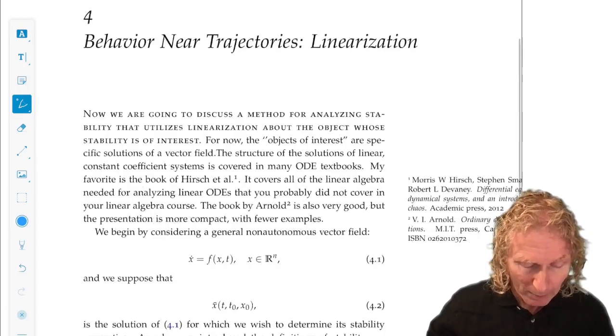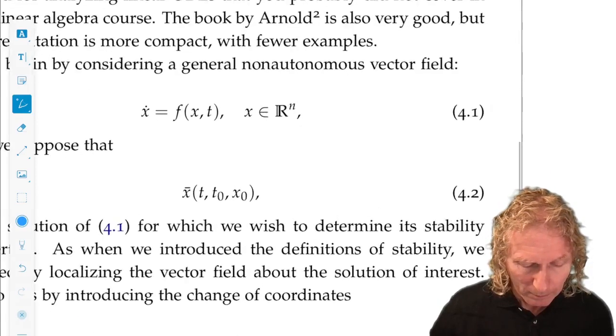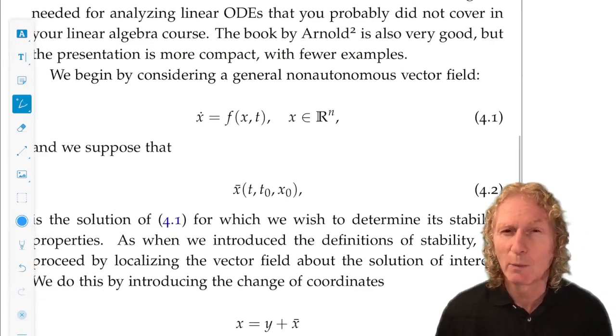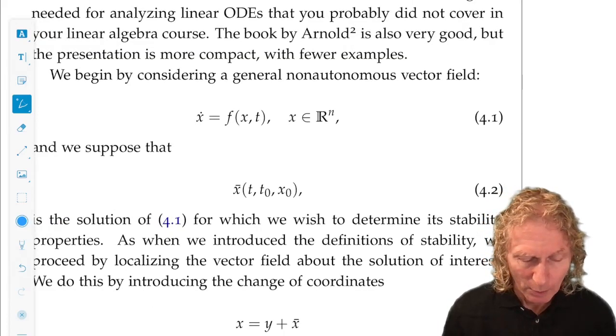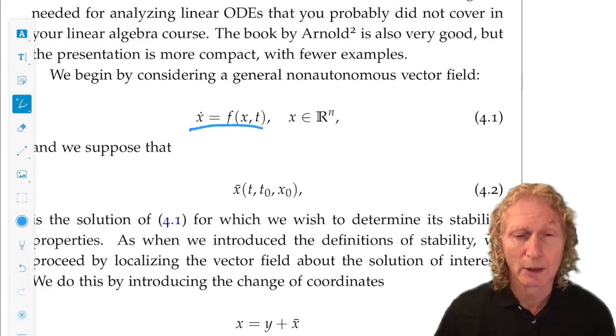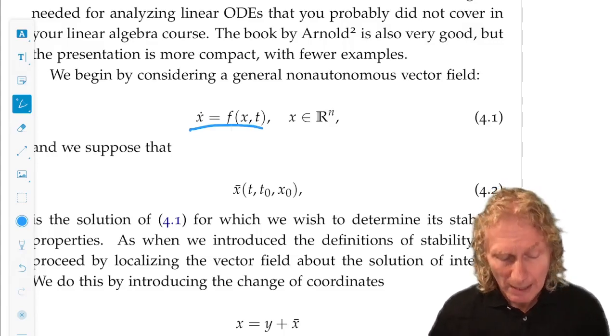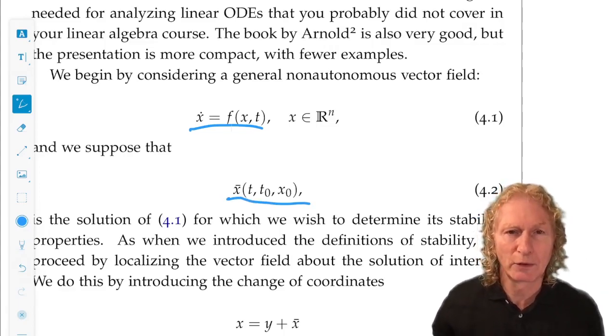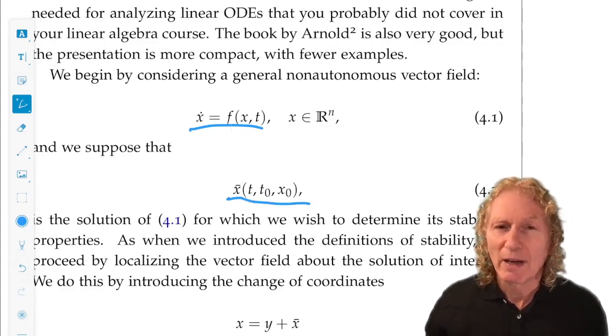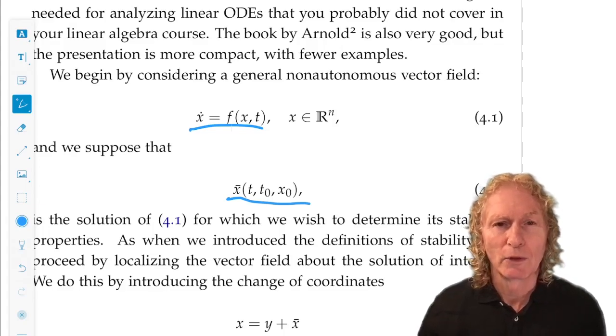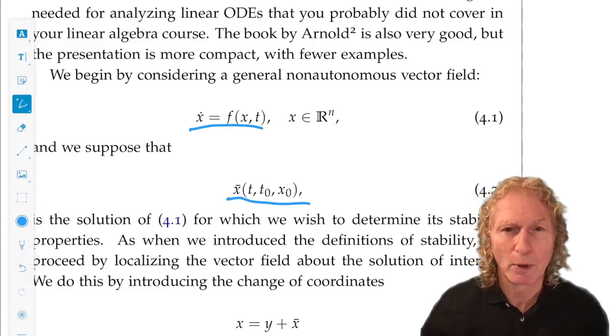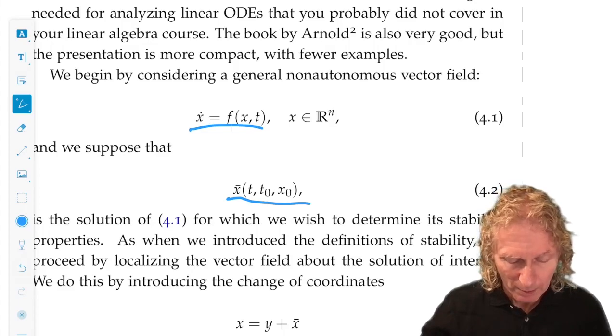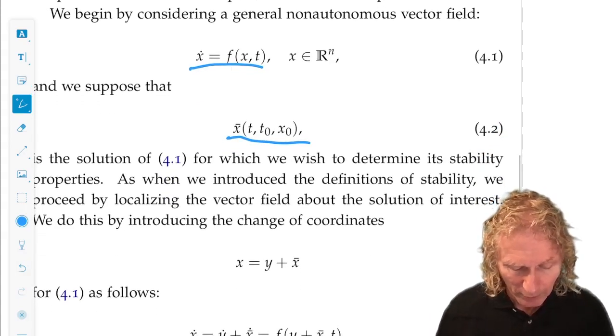So what does that mean? Well, let's start off in the same way we did in the last chapter. We'll consider a general non-autonomous ODE and a specific solution, X̄, which is a function of T, T₀, and X₀. We're going to leave out the arguments when it gets too cumbersome.